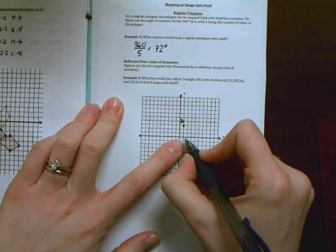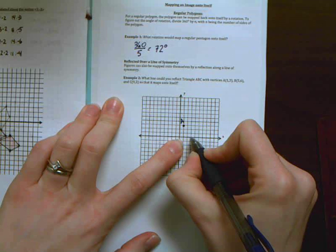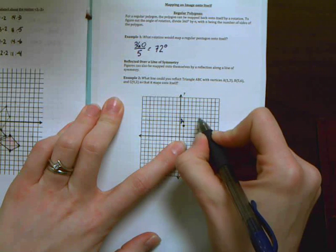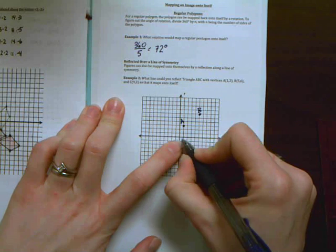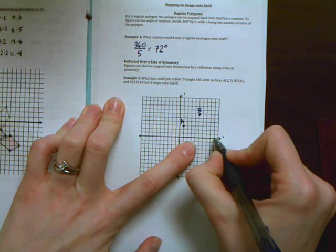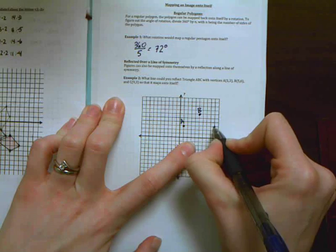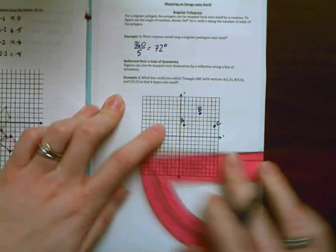So 0,13 is A, 0,56 is B, and then C is right here at 9,3.